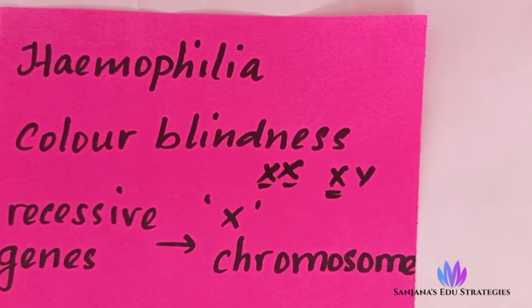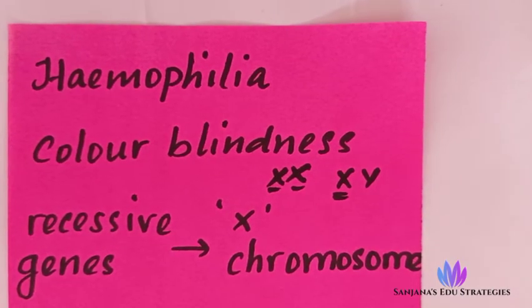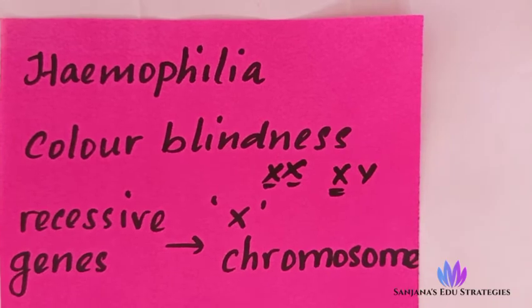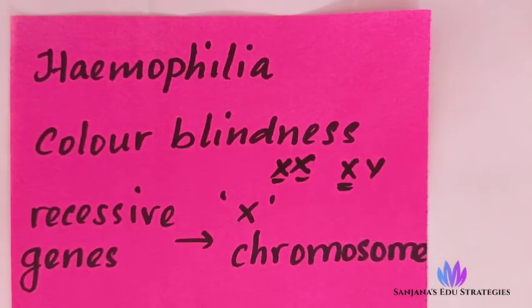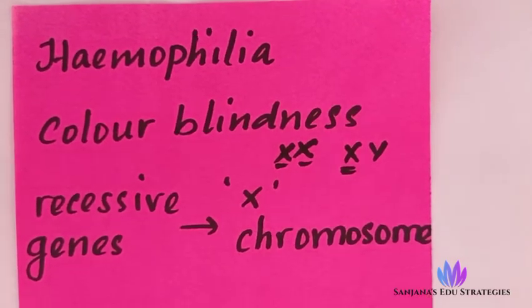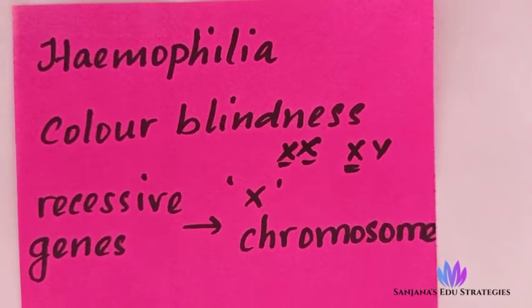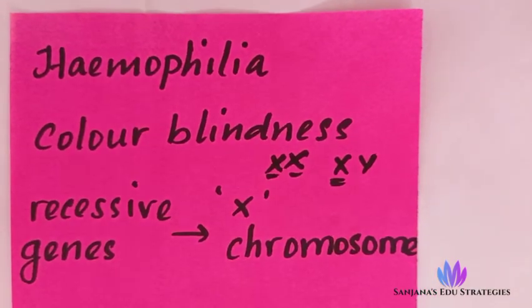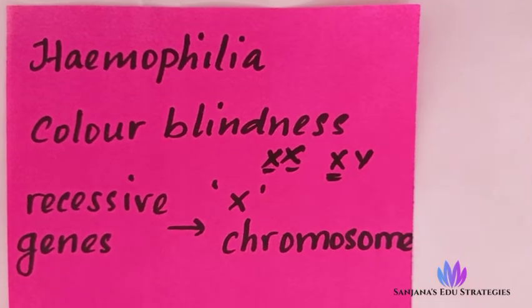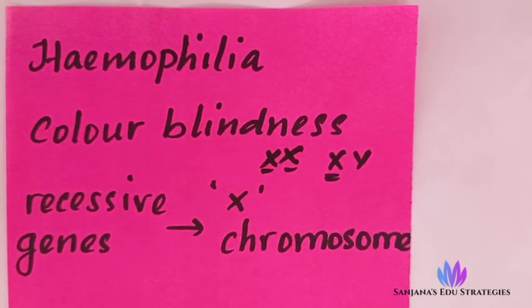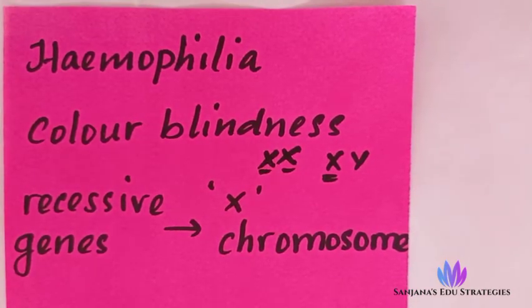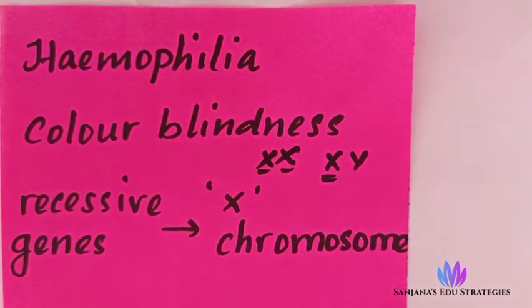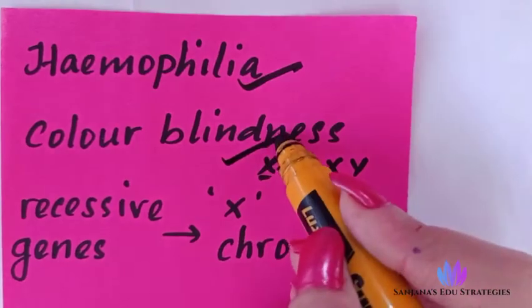Next is color blindness. Color blindness is also a genetic disorder. The symptoms are that the person cannot identify certain colors — for example, red and green. He cannot distinguish red from green. That is called color blindness.